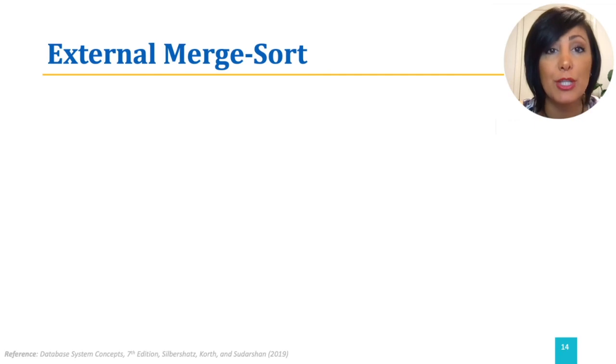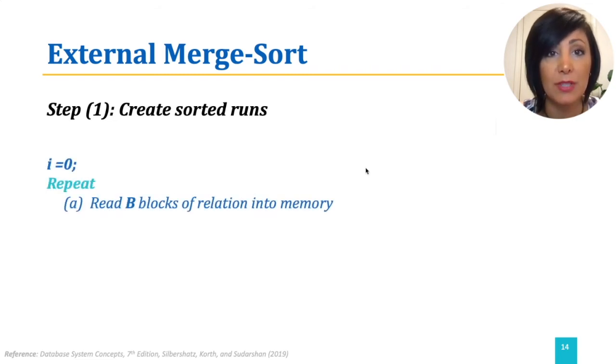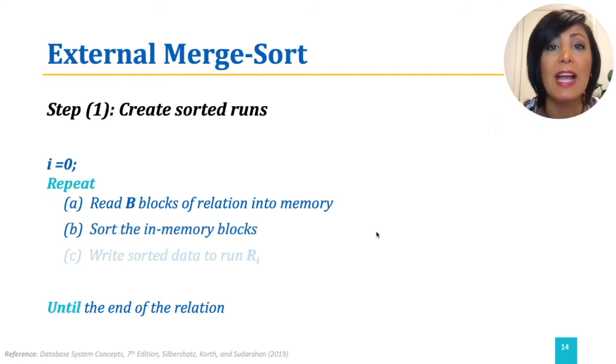The general external merge sort works similarly, using two main steps: sorted step and merge step. In the first step, it creates sorted runs. It starts at the beginning of the relation, reads the file for relation block by block until the end of the relation, and for each block read, it sorts the block in memory and writes it out as the sorted run.